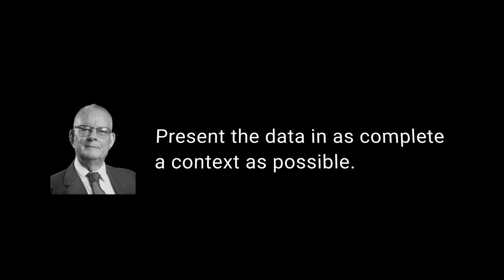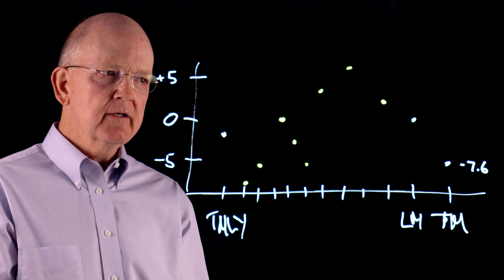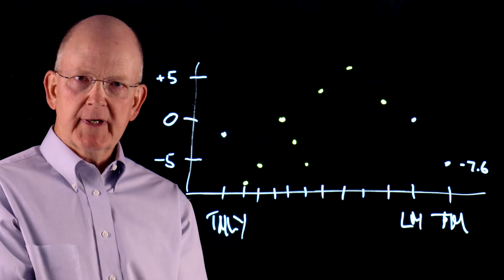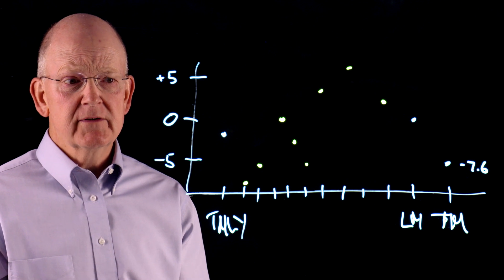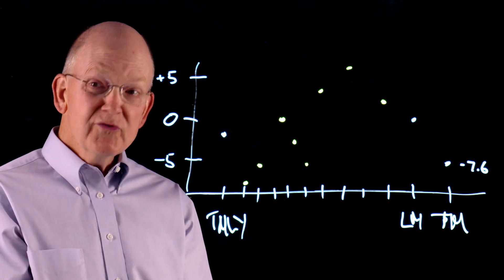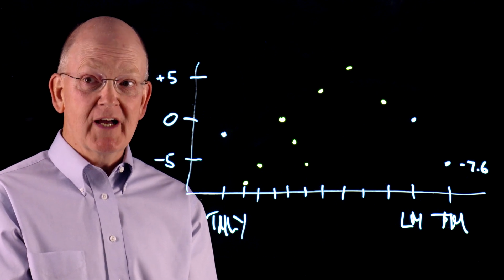Dr. Deming asks us to present the data in as complete a context as we have. So what I've done here is added a complete scenario where we know all the intermediate data points. So if you look at these data, now how do we react to minus 7.6? It's still outside of our standard, but is it unusual given the rest of the data that we've seen? I would argue that it's probably not.